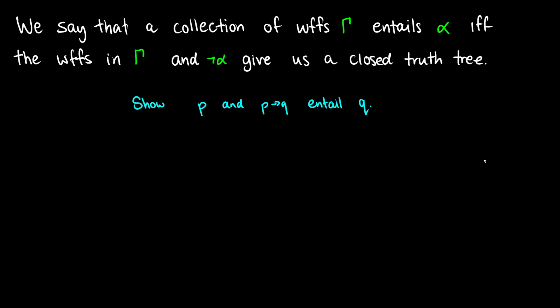In this video we're going to talk about how we can show entailment or validity using truth trees. So say we have a collection of wffs gamma, so this is just a capital gamma, and that entails alpha. What that means is that the wffs in gamma, so this can be one, two, three, four wffs or whatever, and not alpha gives us a closed truth tree.